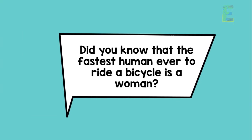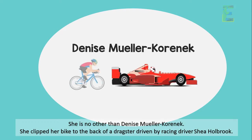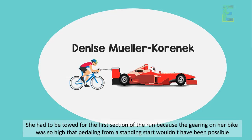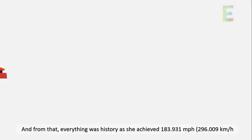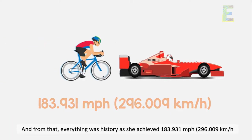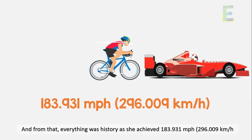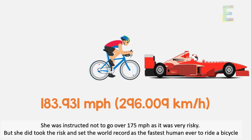Did you know that the fastest human ever to ride a bicycle is a woman? Yes, you heard it right. She is no other than Denise Mueller Karna. She clipped her bike to the back of a dragster driven by racing driver Shea Hallbrook. She had to be towed for the first section of the run because the gearing on her bike was so high that pedaling from a standing start wouldn't have been possible. At around 100 meters per hour or 160 kilometers per hour, she unclipped from the pace car and started accelerating. And from that, everything was history as she achieved 183.931 meters per hour or 296.009 kilometers per hour. She was instructed not to go over 175 meters per hour as it was very risky. But she did take the risk and set the world record as the fastest human ever to ride a bicycle.